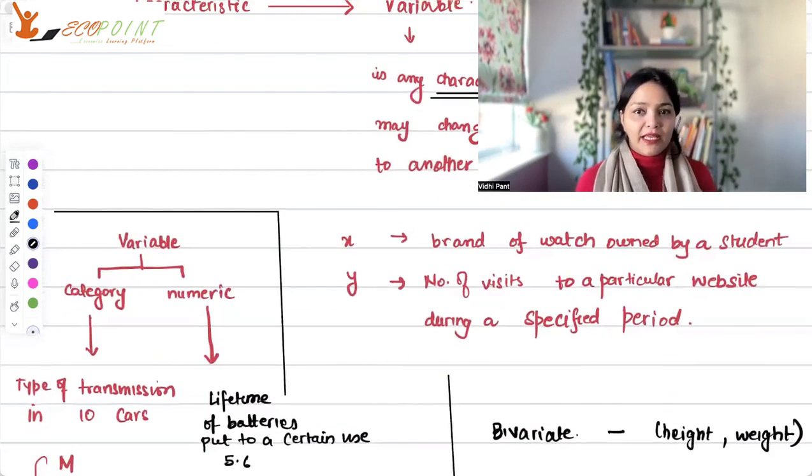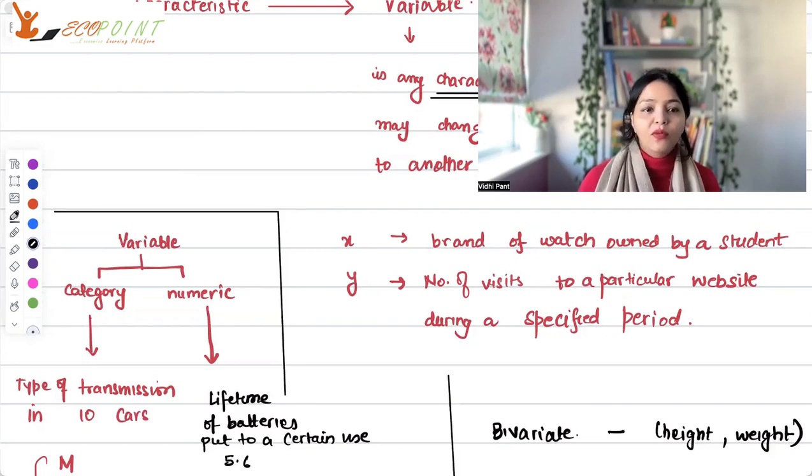Now clearly what we have understood is that our variables could be category-oriented or could be numeric. Suppose we have type of transmission in, say, 10 cars. Type of transmission means is it a manual car or an automatic one? M for manual, A for automatic. So with this example, let's understand. If I am taking this data for all cars of, say, one brand, Hyundai in India, that's population data.